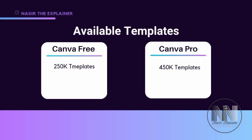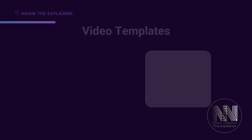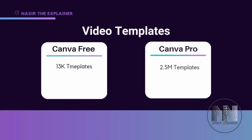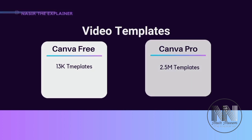For ready-to-use templates, Canva Free offers 250,000, whereas Canva Pro nearly doubles that with 450,000 templates. When it comes to video templates, the numbers are mind-blowing — Canva Free has approximately 13,000 video templates, whereas Canva Pro offers a massive 2.5 million video templates.